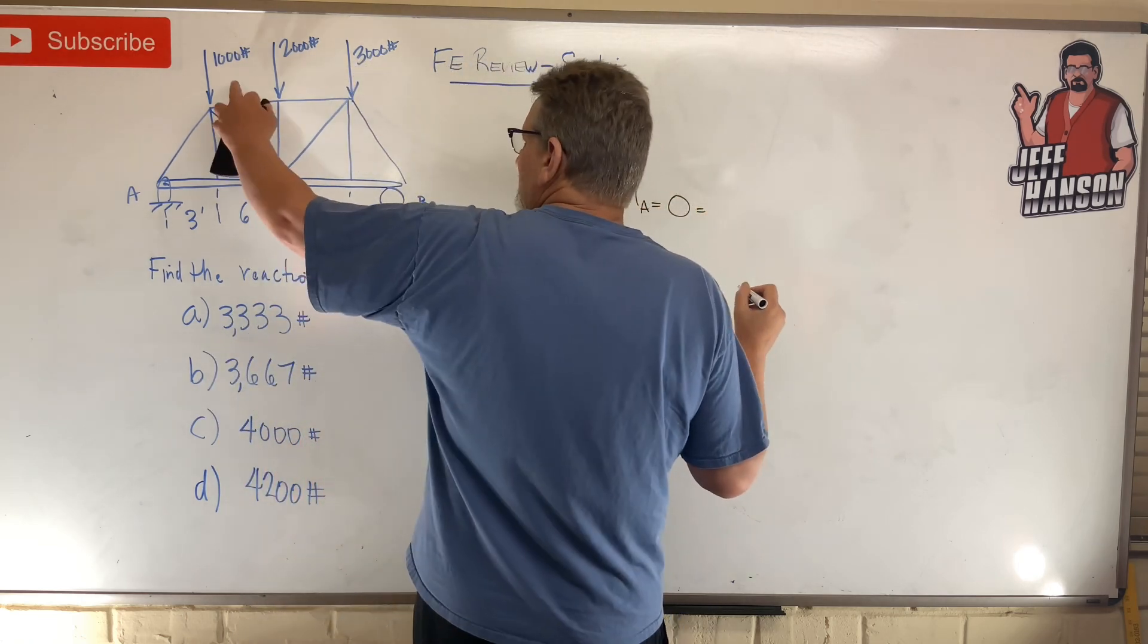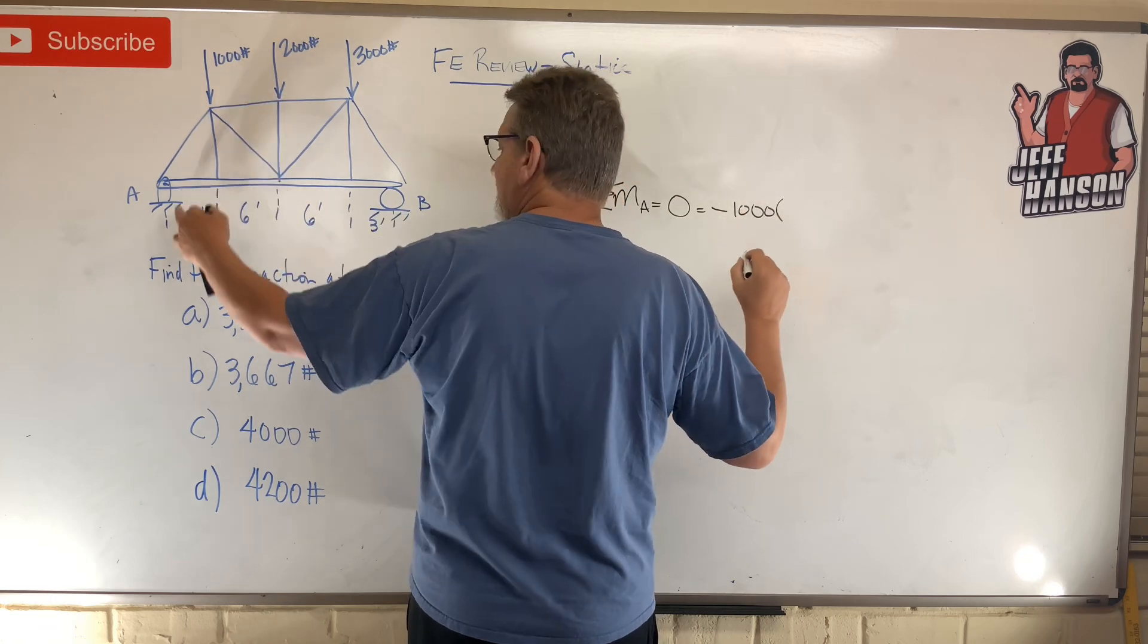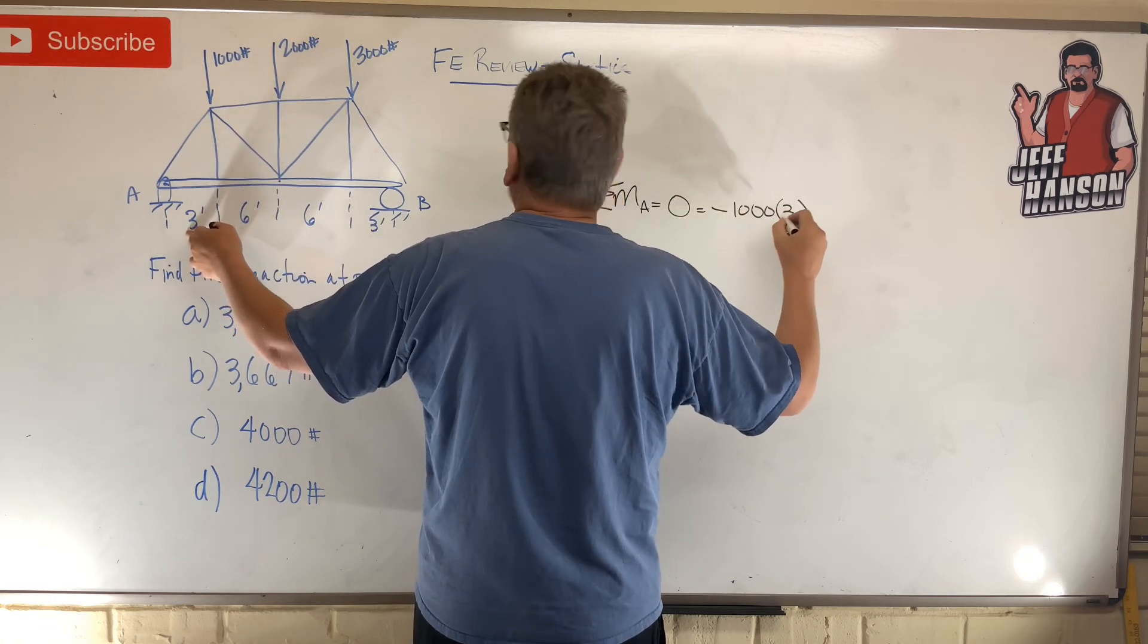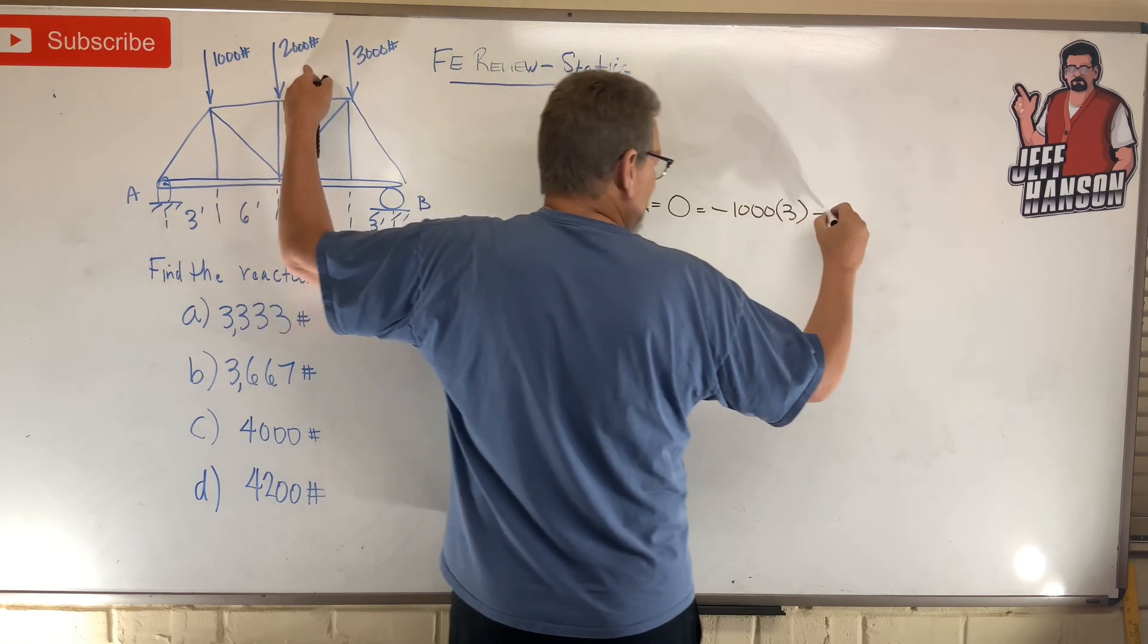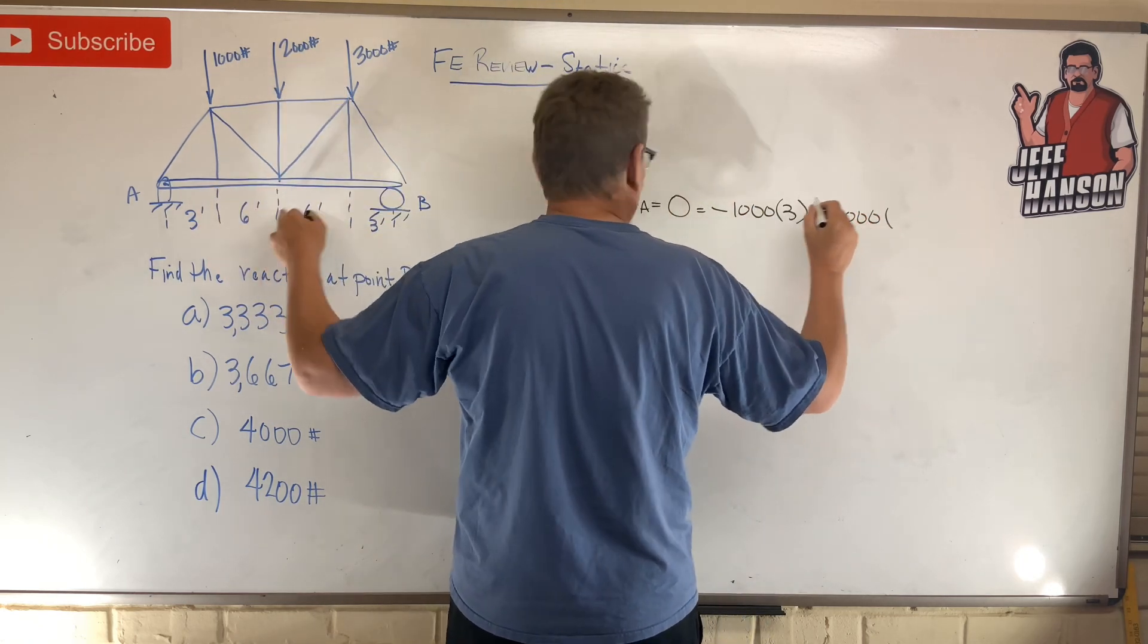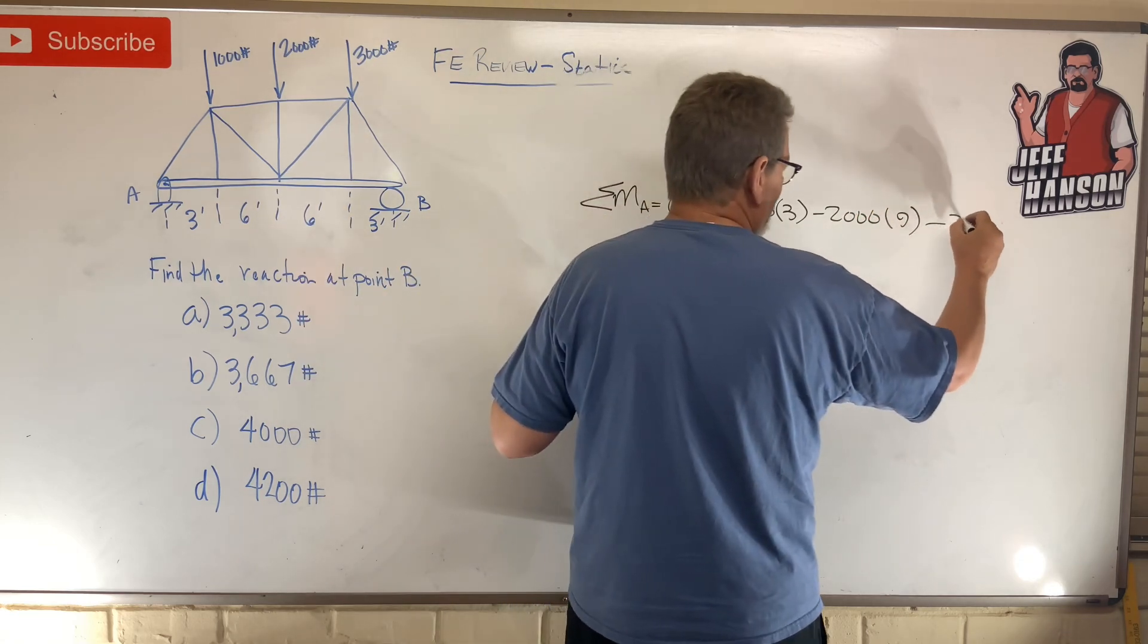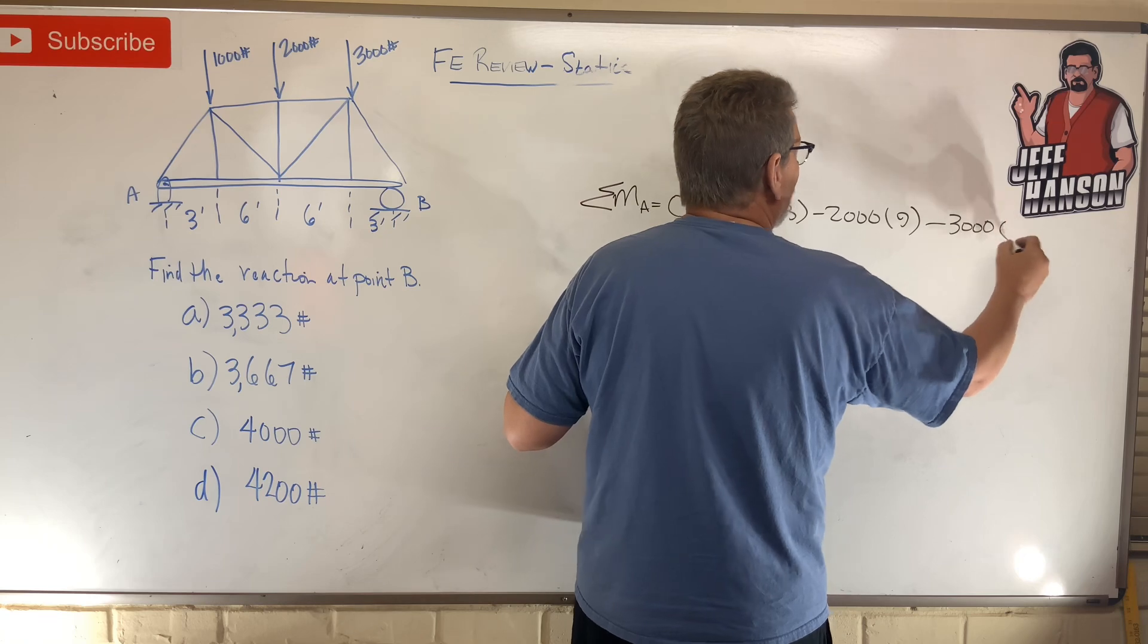So if I take the moment at point A, what do I get? I've got a thousand which rotates me negative, minus one thousand times how far away, three. And then I got two thousand, minus two thousand times how far away, nine. And then minus three thousand times how far away...